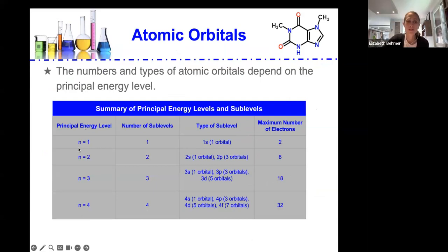So if the principal energy level is one, there's one sub-level, which is one s, and you can have a maximum of two electrons in that sub-level.